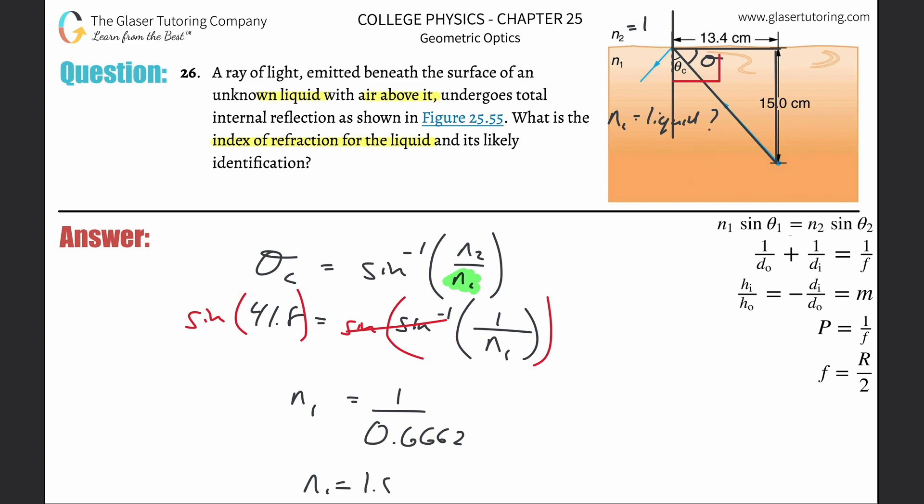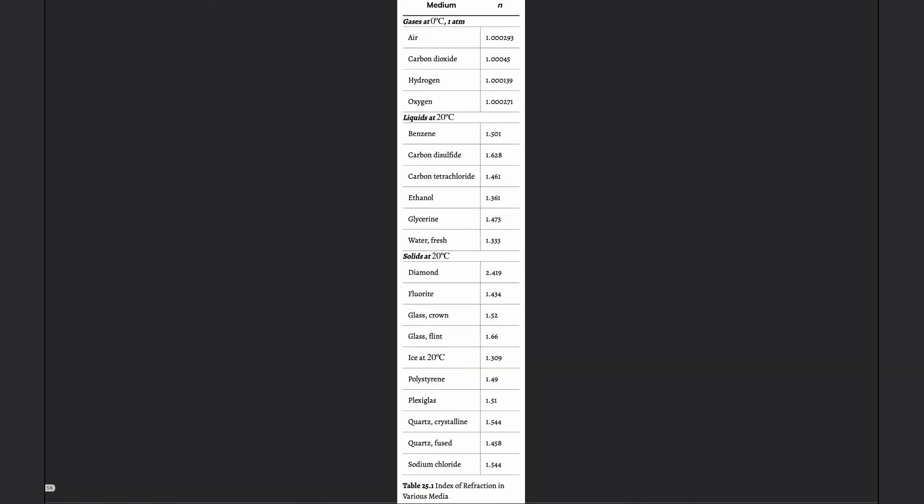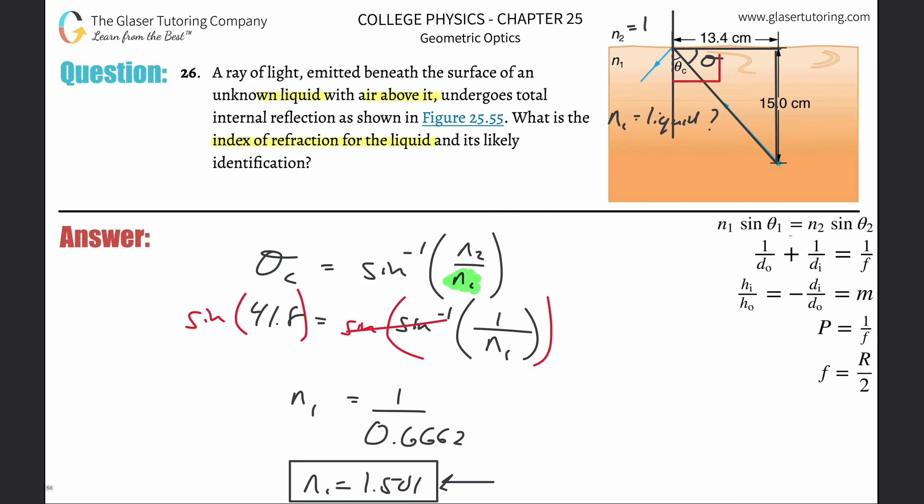Here's the table. Where is about 1.501? If you look through it, you've got to look for the closest one. Be careful, you might go to plexiglass. There's something closer: benzene. Thanks for tuning in, I appreciate it. I hope this helps and I will see you in the next question. Take it easy.